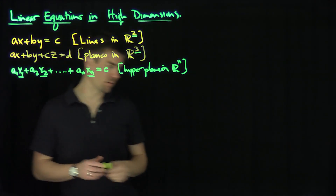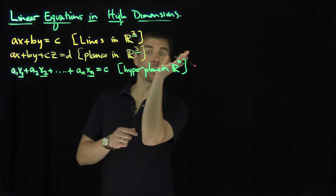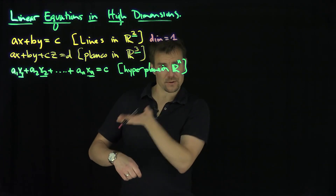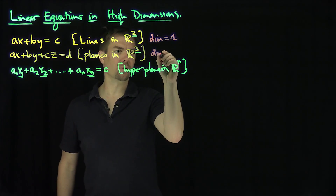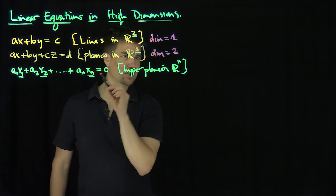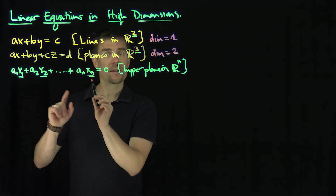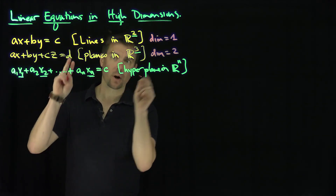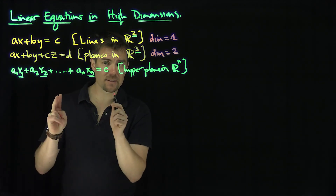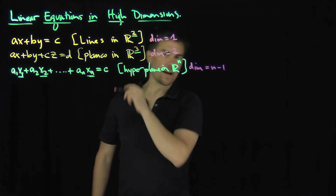Let's think about the dimension of these things. The dimension of a line is equal to one. A plane is a two-dimensional thing, so its dimension is equal to two. It looks like the dimension is always one less than the space in which it resides for these linear equations. This hyperplane, which resides in n-dimensional space, has dimension n minus 1.